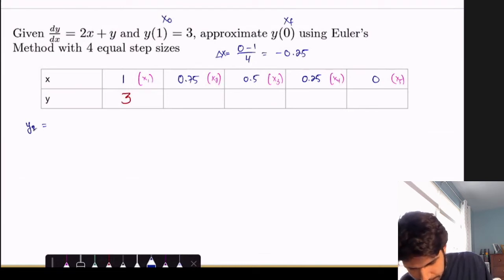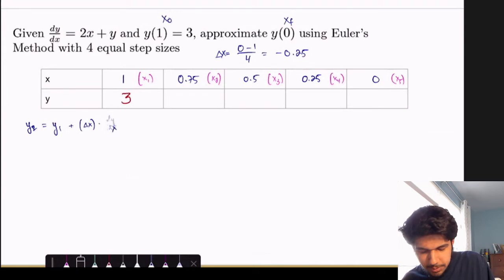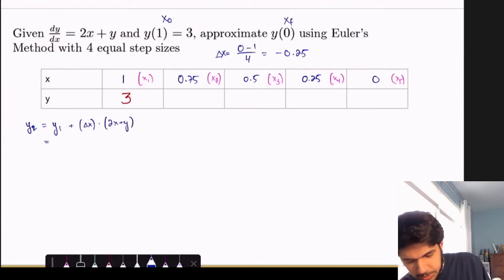Okay, we'll do y sub 2 here. So that's going to be y sub 1 plus delta x times dy dx. And dy dx, we're given to be 2x plus y. So we'll just write that instead.